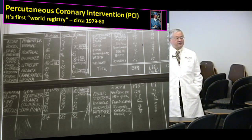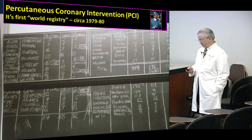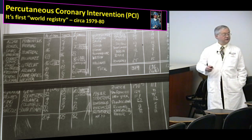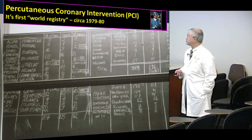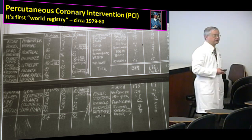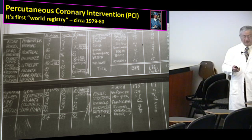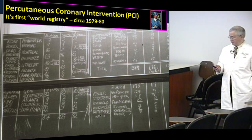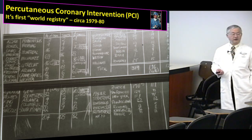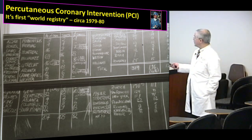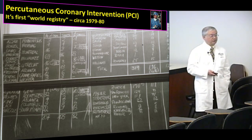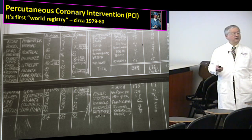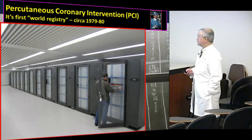In the setting of interventional cardiology, we have always thought about the importance of collecting information as data. This is Andreas Grüntzig, credited as the father of interventional cardiology, who performed the first balloon angioplasty in the world back in 1977 in Germany. By 1979, several hundred angioplasties had been performed in the world, and every one of those is listed on a blackboard. The idea of needing to collect information to better understand what happens with patients over time is not something novel or unique.